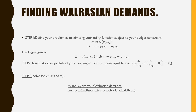In terms of finding your Walrasian demands, let's recap. Step one: define your problem as maximizing the utility function subject to your budget constraint. Your Lagrangian should be your utility function plus or minus lambda times income m minus the price of good one times good one minus the price of good two times good two. Step two: take the first-order partials and set them equal to zero — for example, the partial derivative of the Lagrangian with respect to good one equals zero — and solve each condition for good one, good two, and lambda. Step three: solve for lambda star, x1 star, and x2 star. x1 star and x2 star are your Walrasian demands; we use lambda star as a tool to find them.